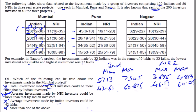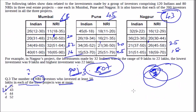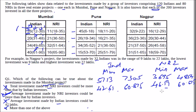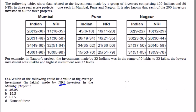Question 4 uses the same numbers. The average investment by NRI investors in Mumbai must lie between 46.18 and 60.67 lakhs. None of the listed answer options falls within this range, so the correct answer is that none of these is valid. That finishes this set.